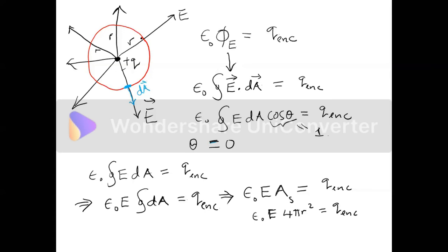So there are now two methods for calculating the electric field. The first method, which we had before, is to use Coulomb's Law with vector resolution. The second method is to use Gauss's Law, which as the next example will show, makes things very simple because it does not involve resolution of vectors.